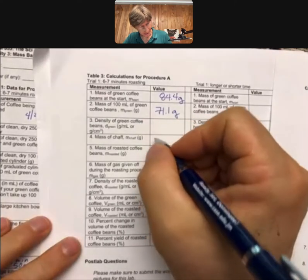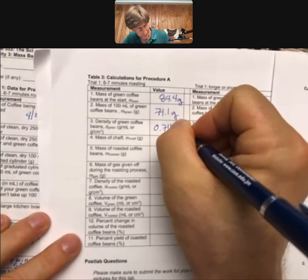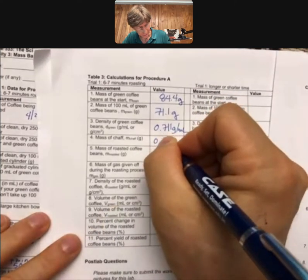Mass of chaff. Oh, I forgot to write down my density. 0.711 grams per milliliter and 0.5 grams.